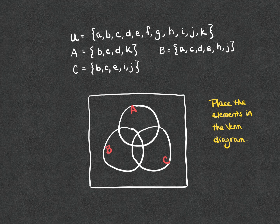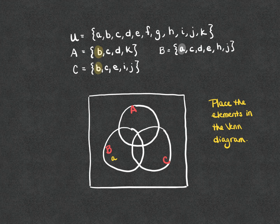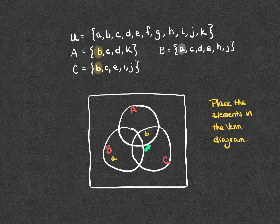Starting with element A, I notice that A is only in subset B — only in subset B. So element A belongs only in B and not in any of the overlapping regions with A or C. Moving on to element B, I notice that B is in both subset A and C, but not in B. So I'm going to place element B in the overlap of A and C, but not in the part that also overlaps with B.